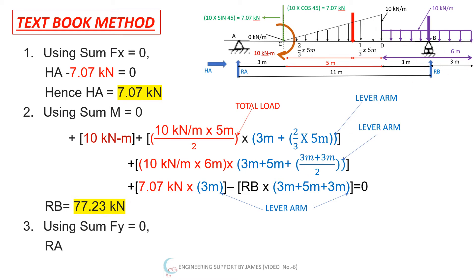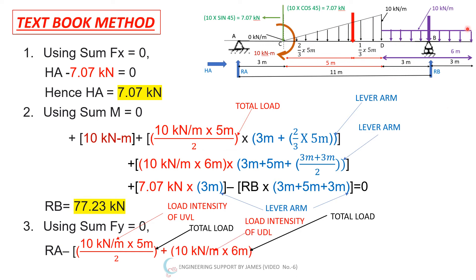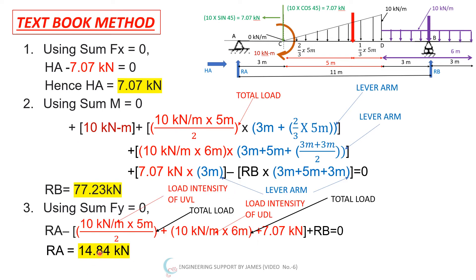Using summation of forces in the Y direction equal to zero: RA (positive/upward) minus the sum of all downward loads. Downward loads are: triangular load = 10 kN/m × 5/2 = 25 kN; UDL = 10 kN/m × 6 = 60 kN; vertical inclined component = 7.07 kN. Adding RB = 77.23 kN (upward) and solving, we get RA = 14.84 kN.